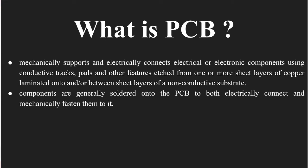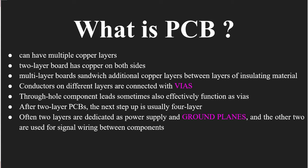A PCB can have multiple copper layers, starting with two possible layers. A two-layered board has copper on both sides — that is, on the top as well as the bottom layer. Beyond that, multi-layered PCBs sandwich additional copper layers between layers of insulating material. Conductors on different layers are connected with vias, which I'll explain later in this video.